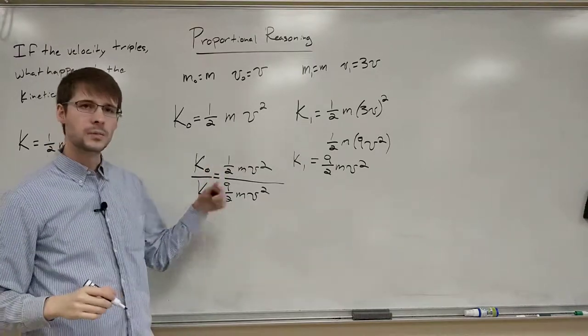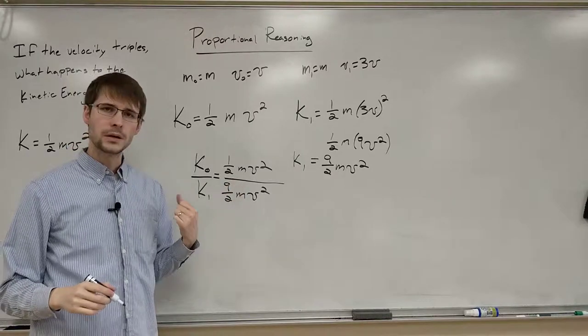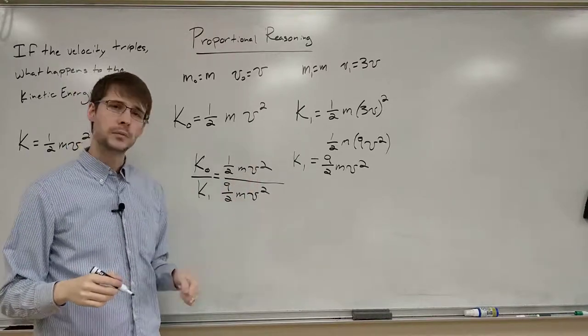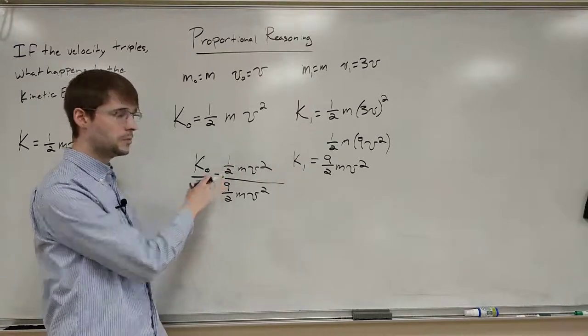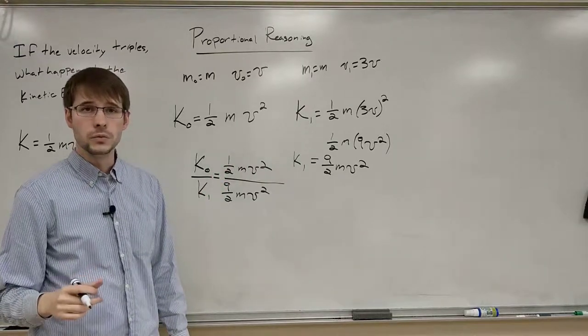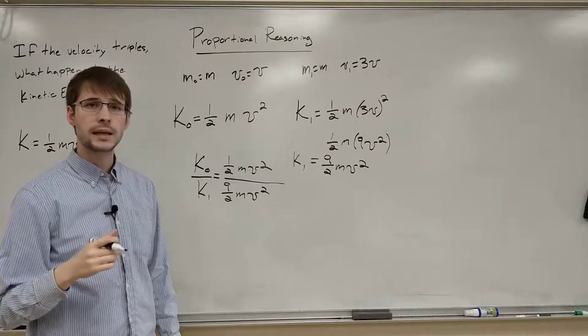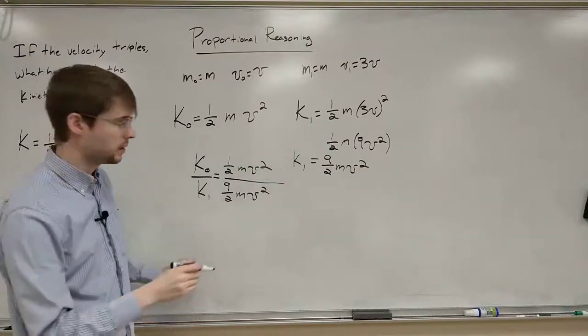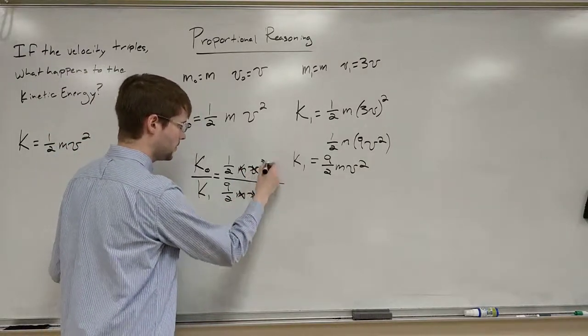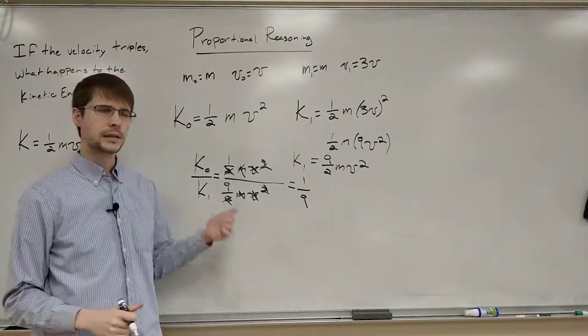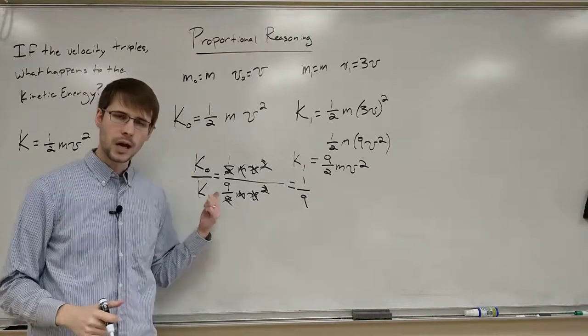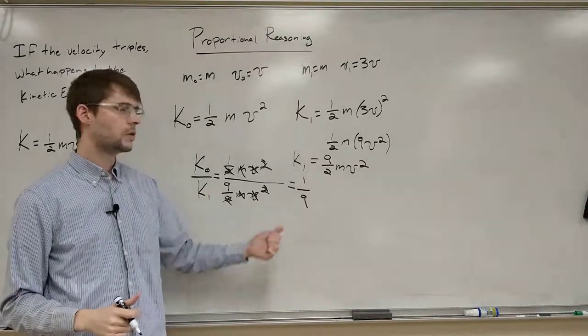Something, something kind of like this. And now what we can do is we can do some cancellations. We see the top and the bottom here on the right have a mass. The top and the bottom here on the right also have v squared. And they also both have a number divided by 2. So we can cancel out the half. We can cancel out the m. We can cancel out the v squared. And so we cancel everything out. We get that k initial, k0 over k1 is equal to 1 over 9.